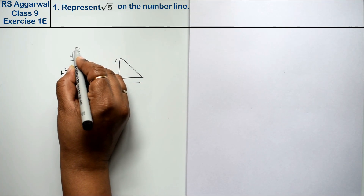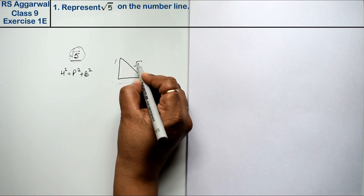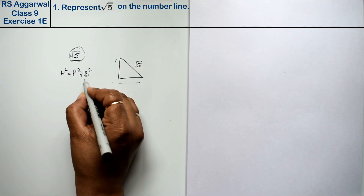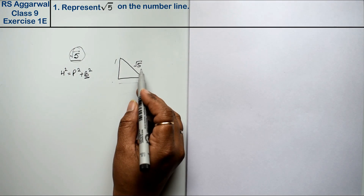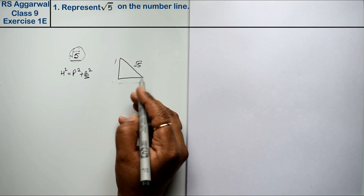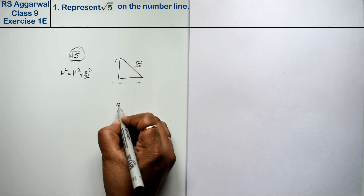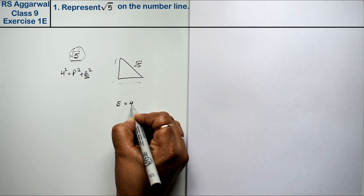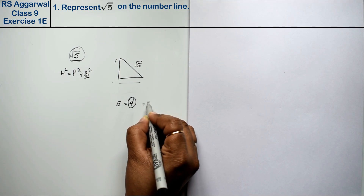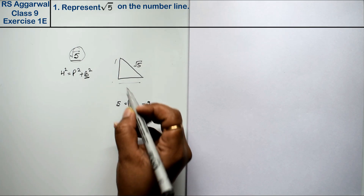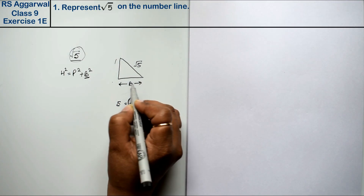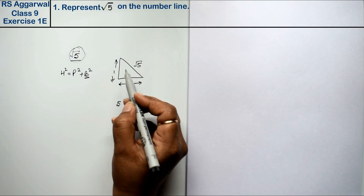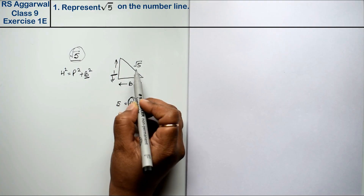To represent root 5, first of all we need to know how to calculate the base. You can see that which value is the nearest perfect square less than 5 — that is 4, and whose square root is 2. So we find that base is 2, and we always take 1 unit as perpendicular.